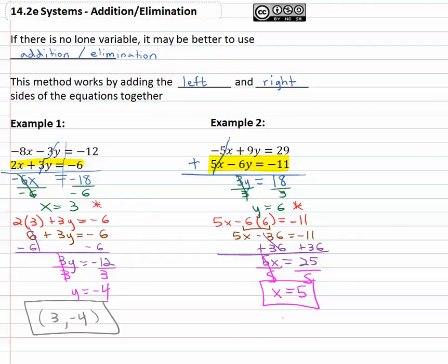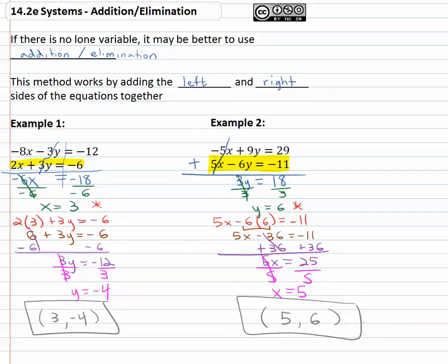Of course, this isn't our final answer because our final answer is written as an x, y pair — x comma y. When x is five, y is six. We have now found the solutions by adding the equations together using the addition or elimination method.